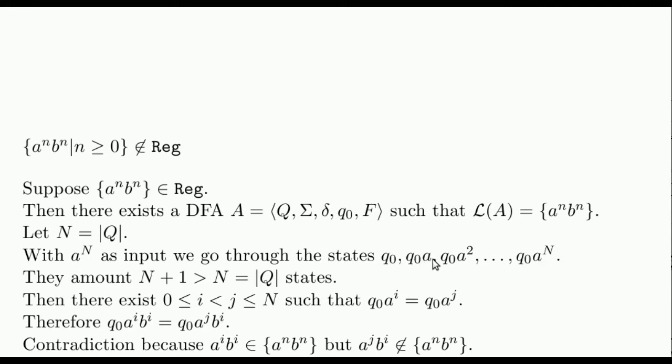The initial state, the state reached after reading one A, the state reached after reading two As, and so on. All together there are N plus 1 states. Since they amount more than the total number of different states in Q, necessarily two of them are repeated.